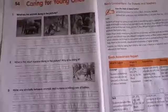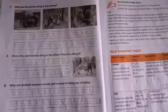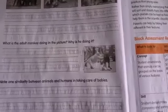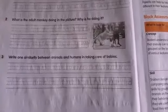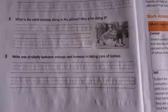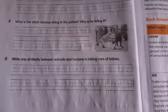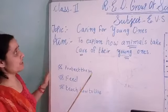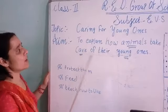After reading, students will do the workbook. Question number 2: what is the adult monkey doing in the picture? Why is it doing it? Question number 3: write one similarity between animals and humans in taking care of babies and how to take care of their babies.